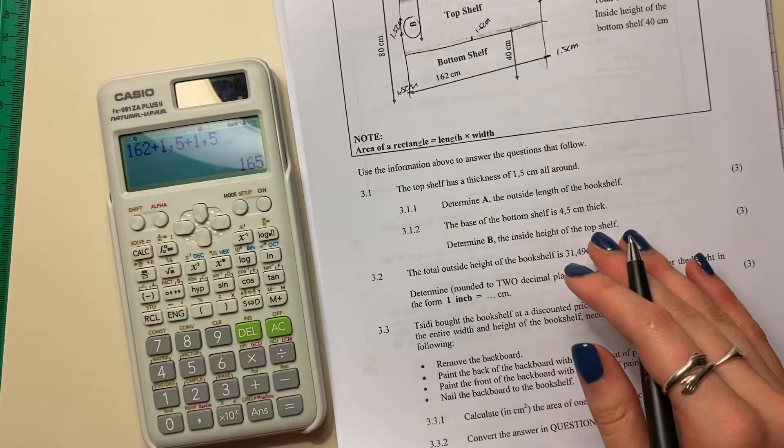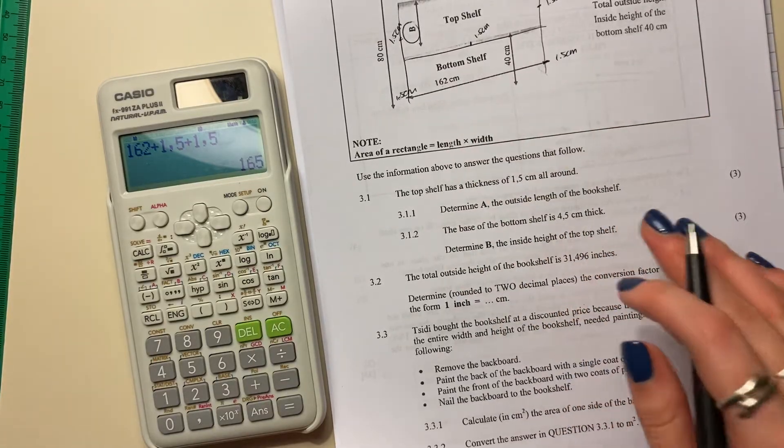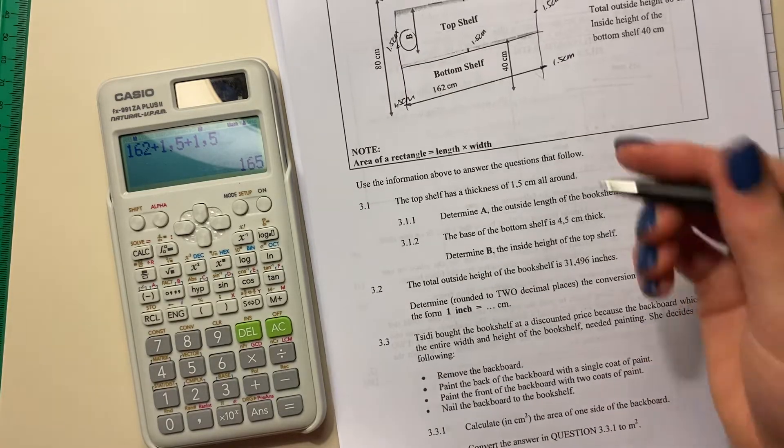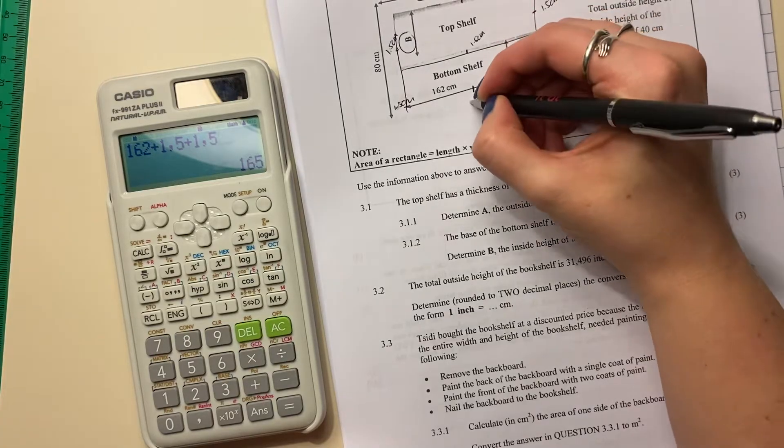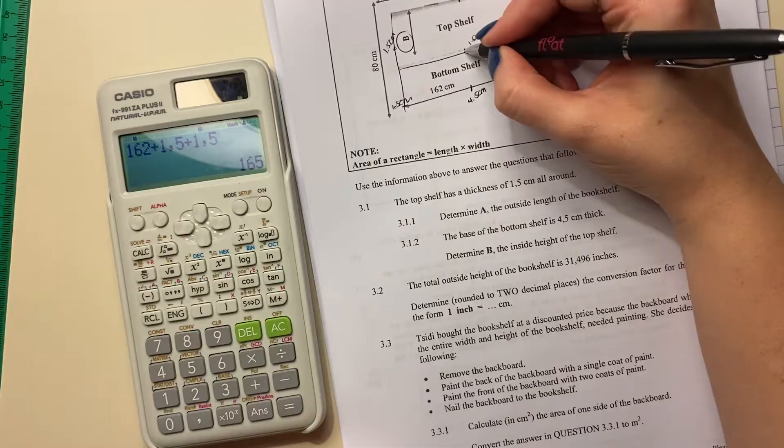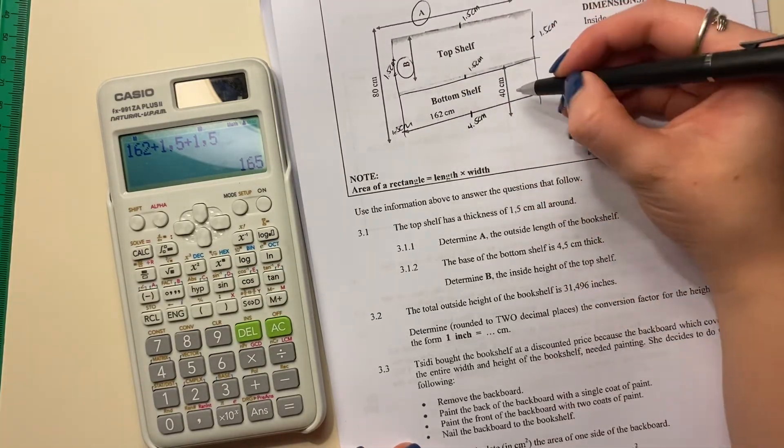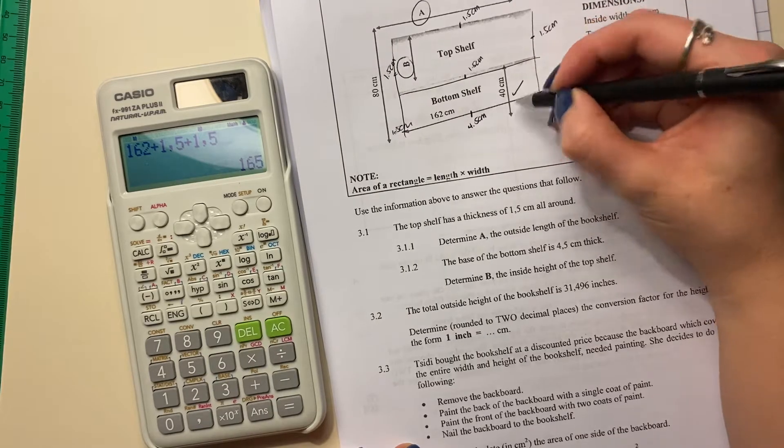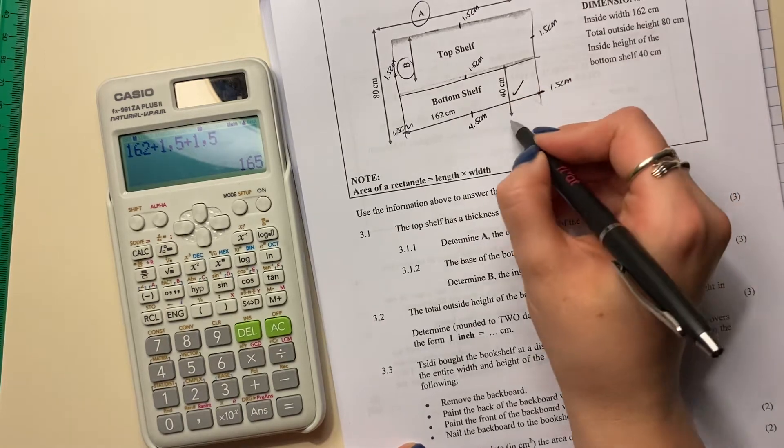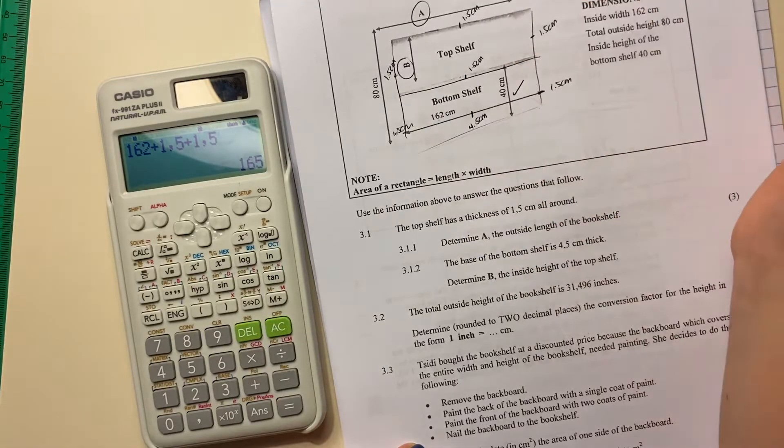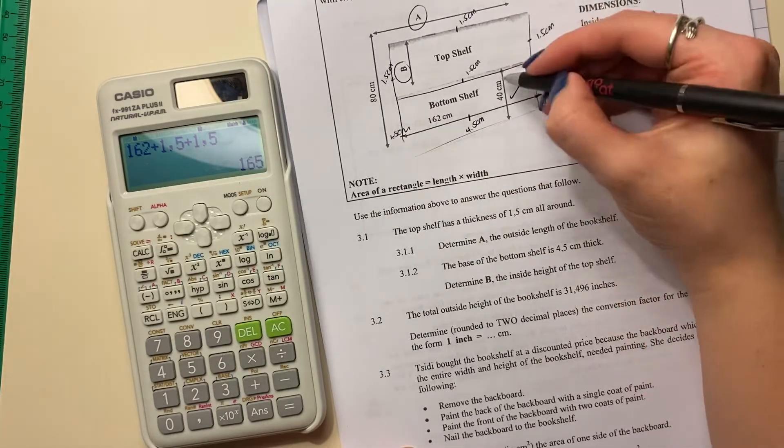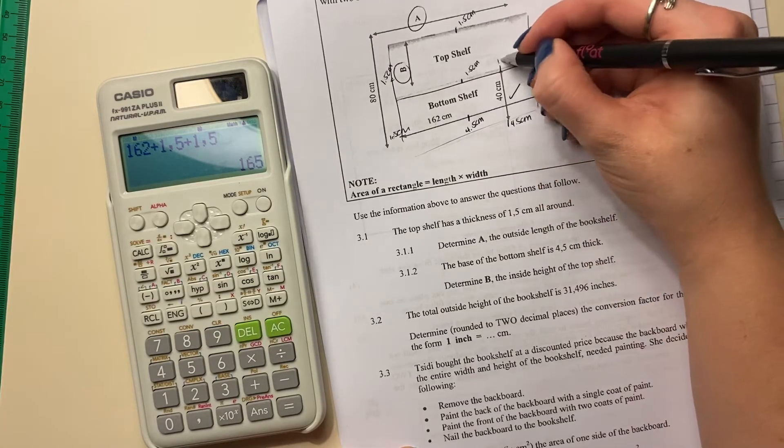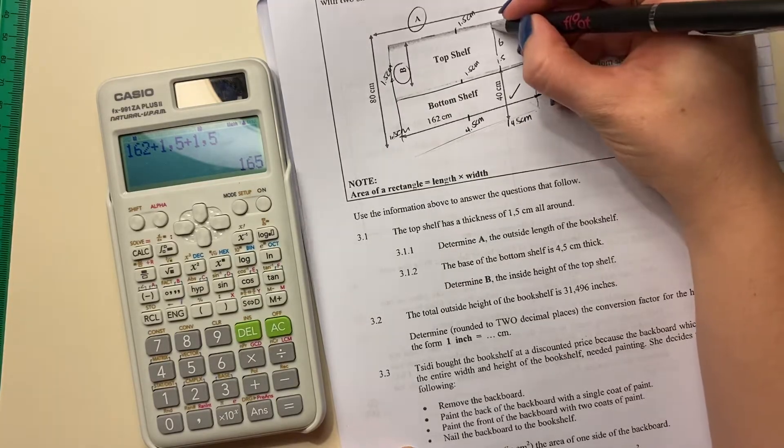Let's move on to the next question. It says the base of the bottom shelf is 4.5 centimeters thick. Determine b, the inside height of the top shelf. So it's basically saying this little bit over here is 4.5 centimeters. We know that that's 1.5 centimeters, and that's 1.5 centimeters. So we've got all these lengths, because we have 40 centimeters, which is that height. So we've got 40 centimeters, which it says is the inside height of the bottom shelf. Then below that is 4.5 centimeters. Above that is 1.5. Then you have b, and then you have 1.5.